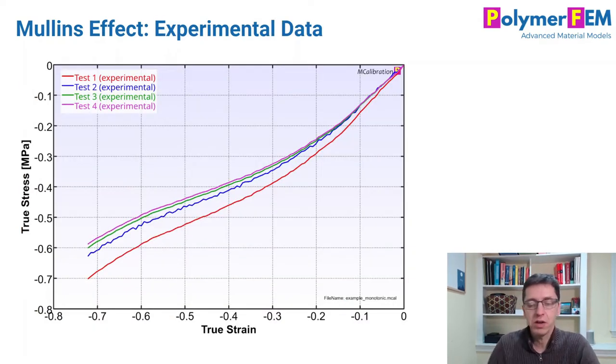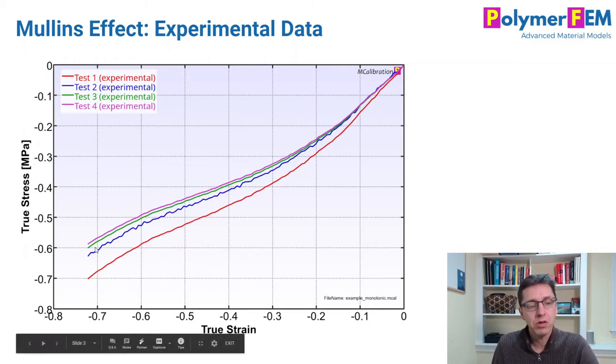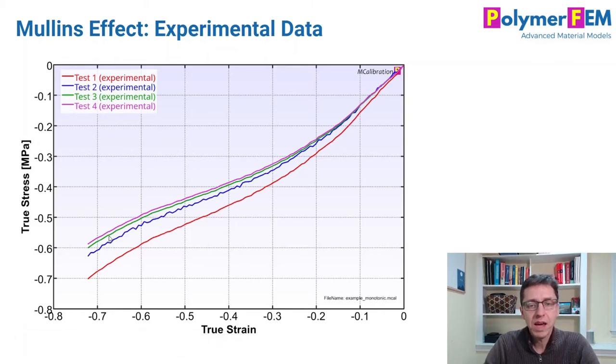So here's the first figure that shows a very brief representation of what the Mullins damage is. I compressed a piece of rubber to about 70% strain and the red curve is the response I get. Then I took the material out of the test machine and put it back in again and run another test on the same specimen and got the blue curve. And then a third time and a fourth time. You see that each of these times the stress magnitude kept going down a little bit but seems to approach a steady state response. That softening that occurs during the first two cycles is the Mullins damage. So clearly this can be important if you want to analyze your products very accurately.